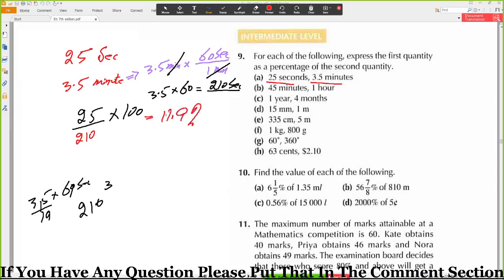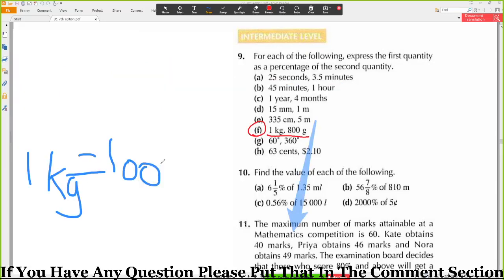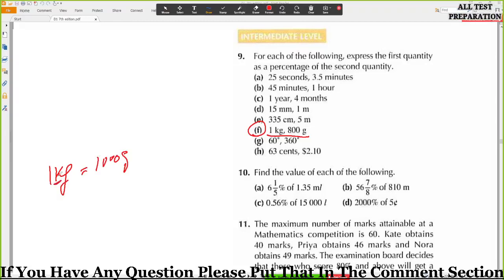Okay, this will be the answer of this question. This will always be equal to, your 1 kg will always be equal to 1000 grams. Whenever you see this alphabet K in maths, you will always put 1000. Like 1 km is equal to 1000 meters. Instead of K, I have put three zeros here.